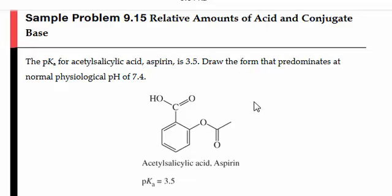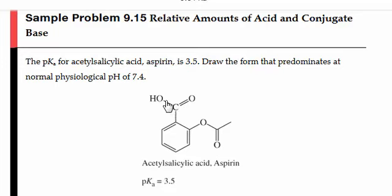Doing a quick review of our functional groups: this functional group right here is an ester, an aromatic ring, and then a carboxylic acid functional group, where we have the carbonyl carbon bonded to a hydroxyl group. This is our acid functionality in acetylsalicylic acid.